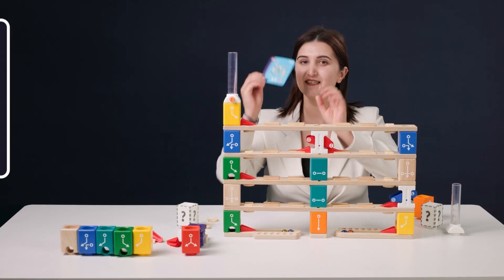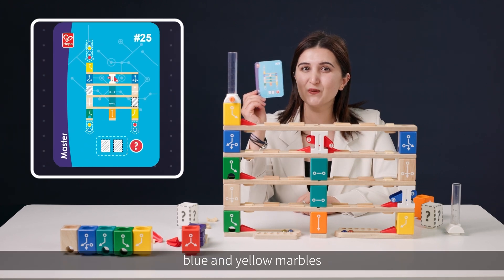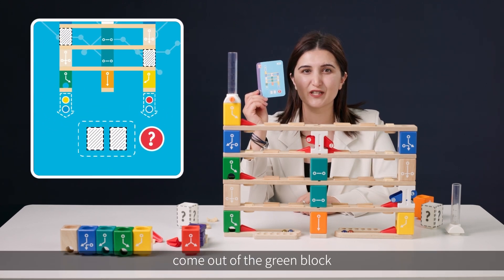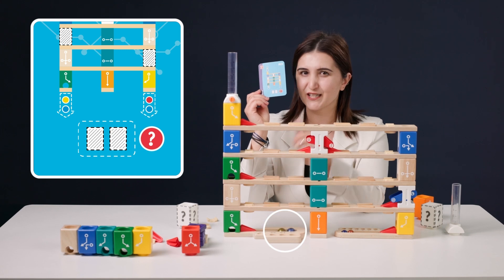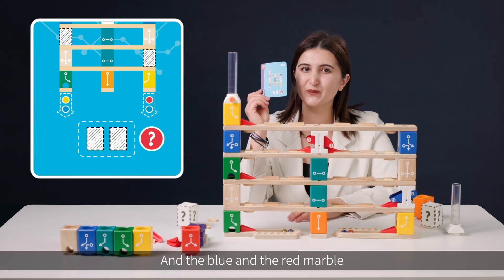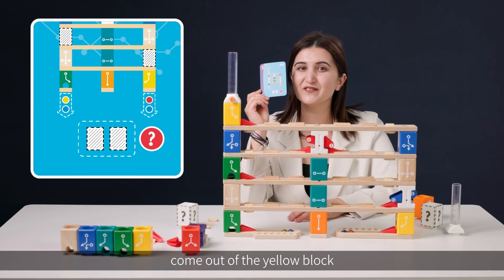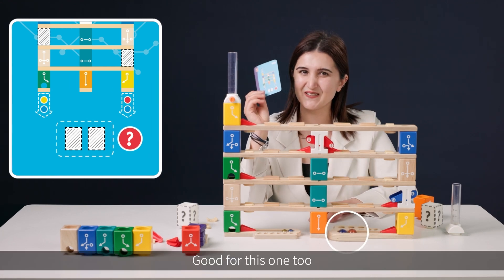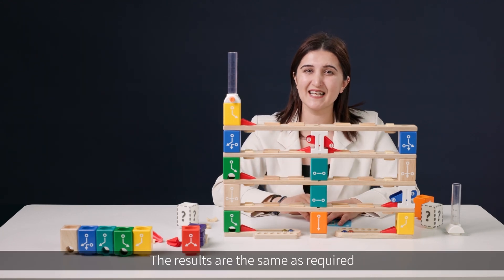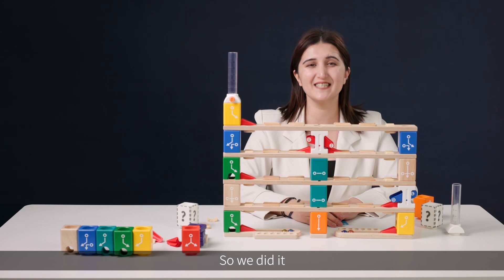Let's check the cards. According to the card, blue and yellow marbles come out of the green block. Good for this one. And the blue and the red marble come out of the yellow block. Good for this one too. The results are the same as required. So, we did it.